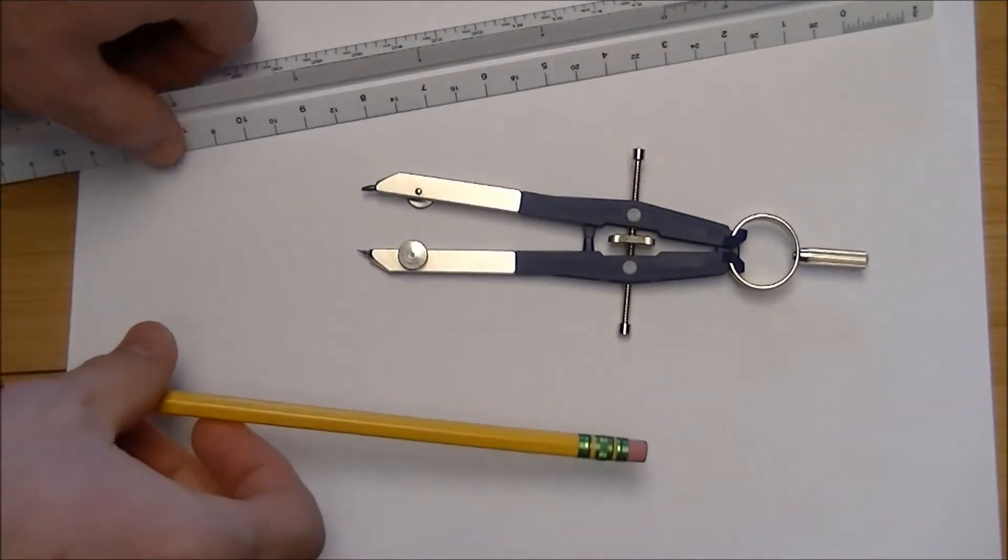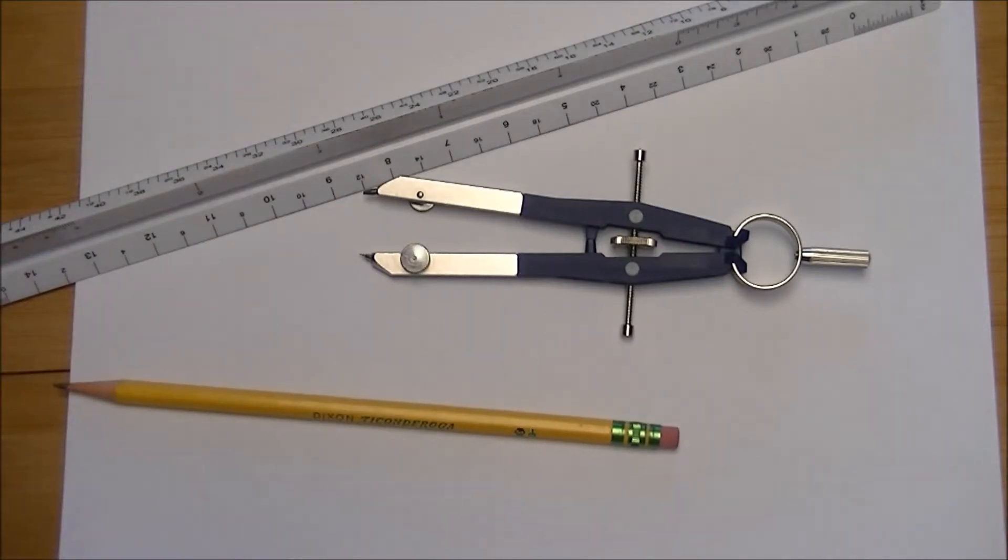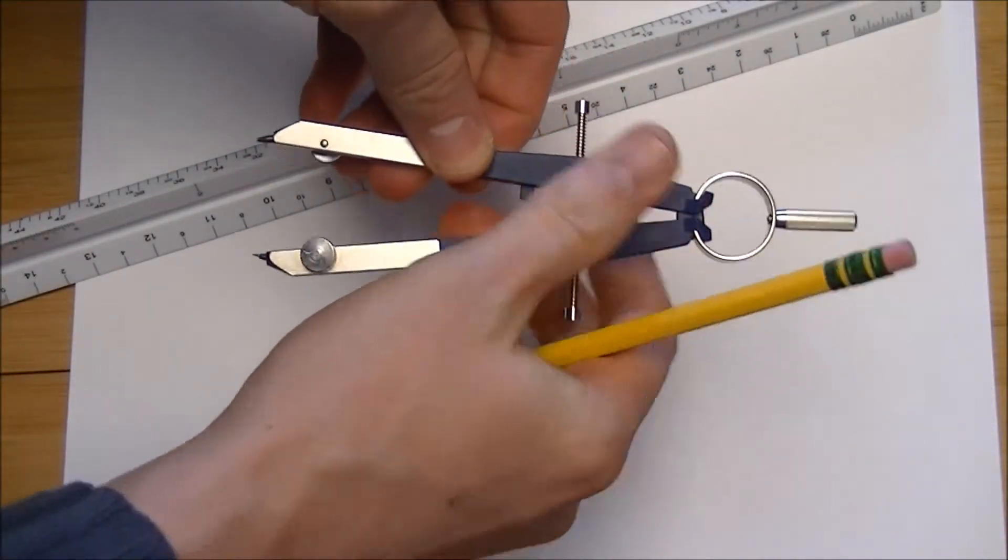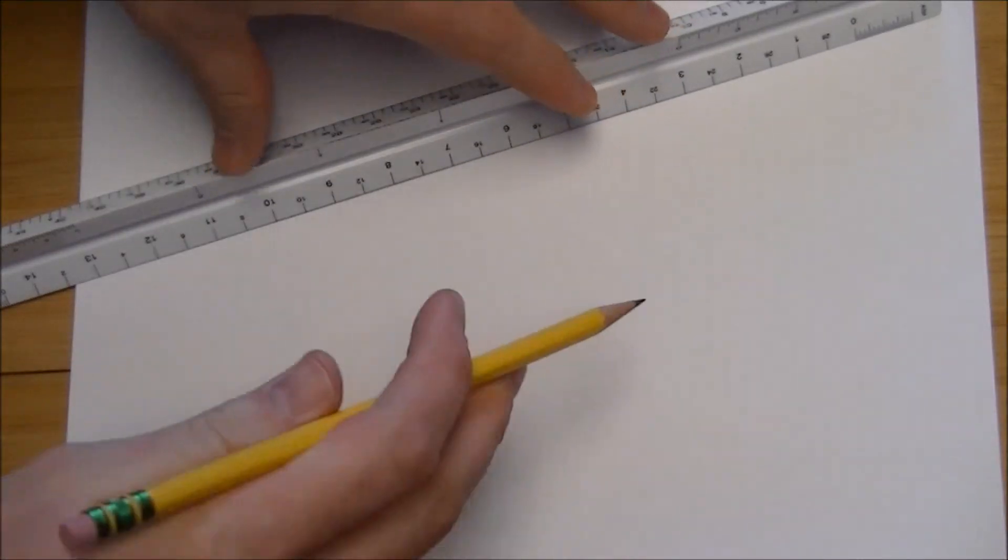Using a compass, a straight edge, and a pencil, we can also do something called bisecting angles. Or in other words, cutting an angle exactly in half.